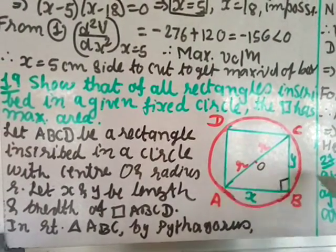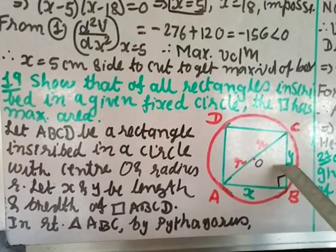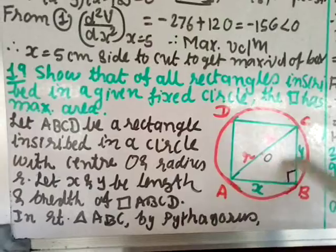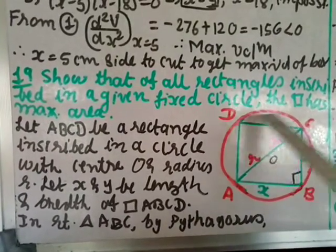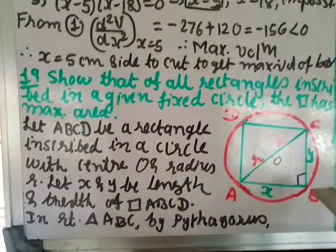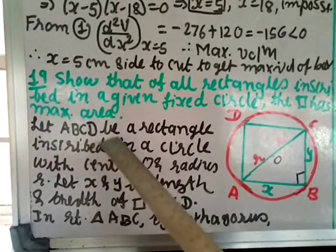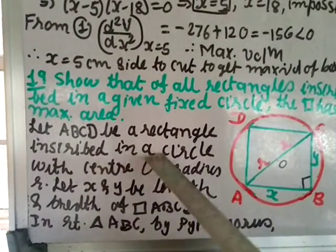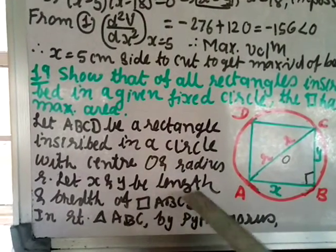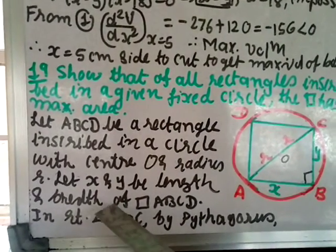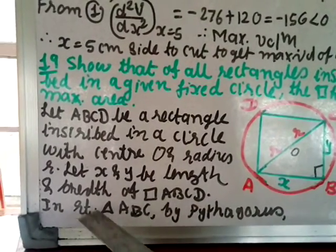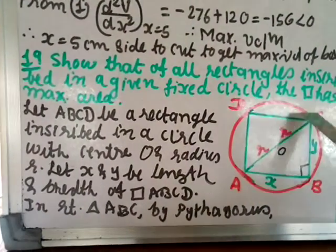Question 19: Show that of all rectangles inscribed in a given fixed circle, the square has maximum area. Consider a circle with centre O and radius r, with rectangle ABCD inscribed in it, having length x and breadth y. We need to show ABCD is a square, meaning x equals y.